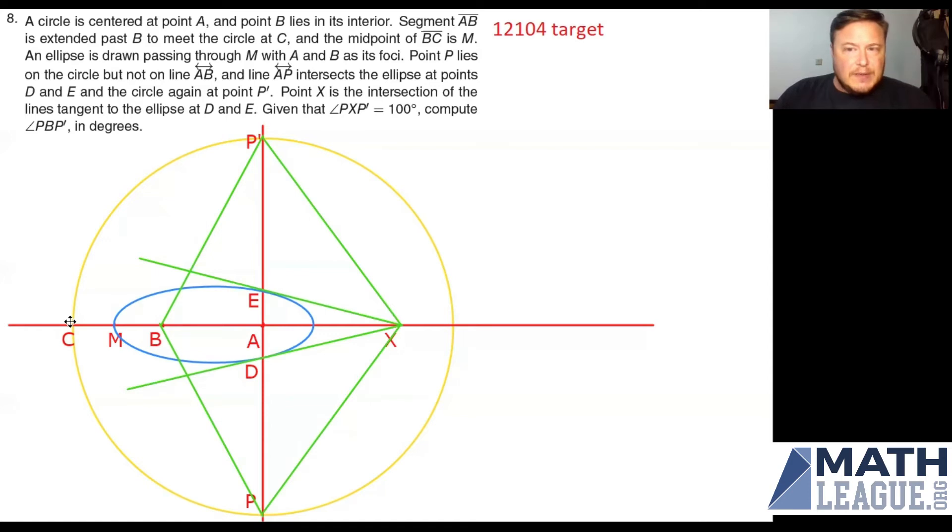Now that's going to come in handy because let's take advantage of what we know about an ellipse. There's two main pieces of information about an ellipse that we're going to use here today. Number one is that if I start at either focus of the ellipse and I go out to any point on the ellipse and then back to the other focus, that's going to give me a constant distance.